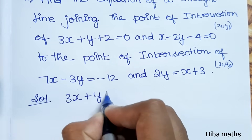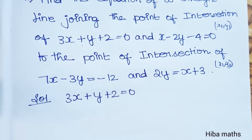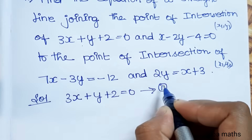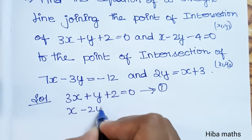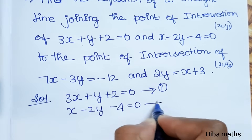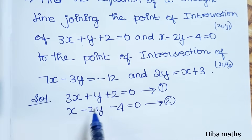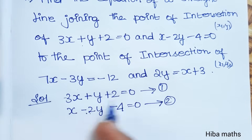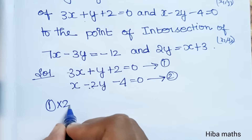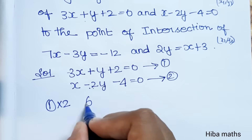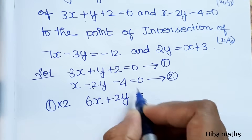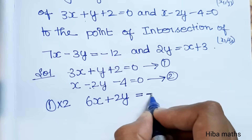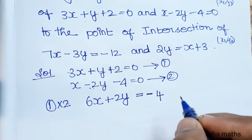3x + y + 2 = 0 is the first equation, and x - 2y - 4 = 0 is the second equation. Multiply the first equation by 2: 2 × 3 = 6x, 2 × y = 2y, and 2 × 2 = 4.